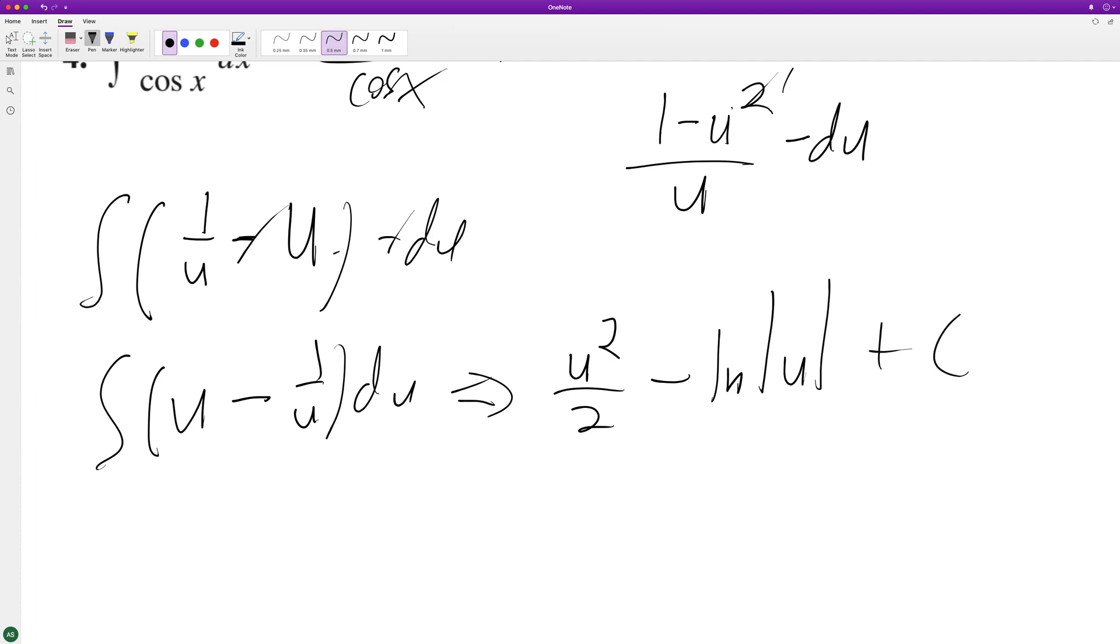Substitute back in for u, we used cosine of x. So we have, this is u squared over 2, so it's the same thing as 1 half cosine squared x minus the natural log of cosine of x plus c.